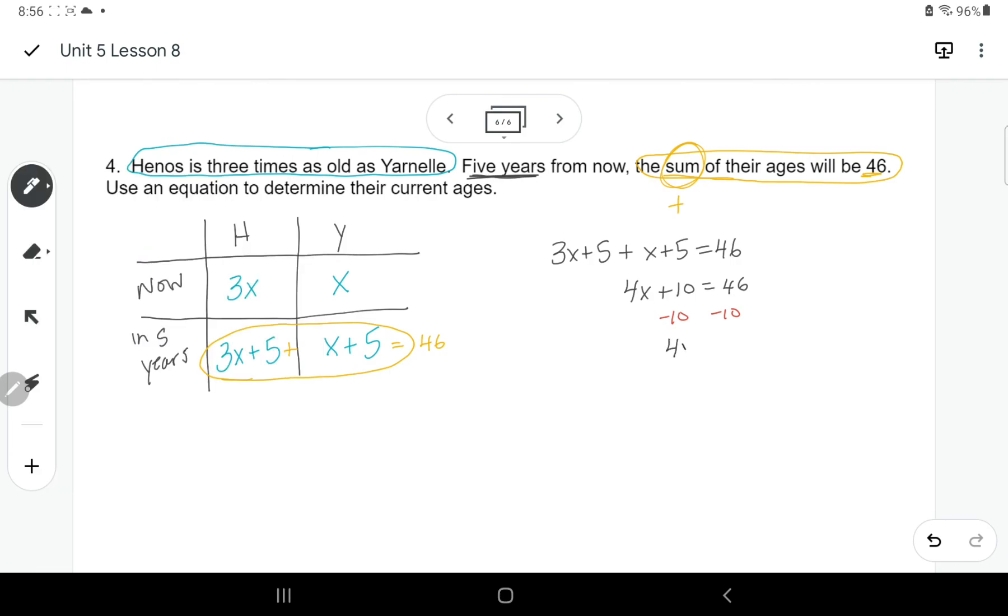So 4X equals 36. And divide by 4 on both sides. I get X equals 9. So their current ages would be 9 and three times 9, which is 27.